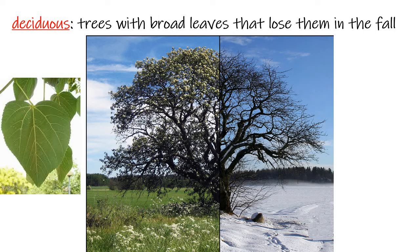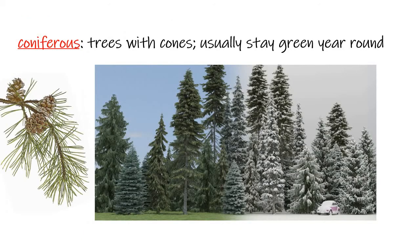Now let's look at different types of vegetation. Deciduous trees are trees with broad leaves — flat and open — and those trees lose their leaves in the fall and are dormant during the winter. The other type is coniferous, c-o-n-i-f-e-r-o-u-s. It's easy to remember because it looks like it has the word 'cone' in it — coniferous trees reproduce with cones. They usually have needles instead of broad leaves, and they stay green year round.